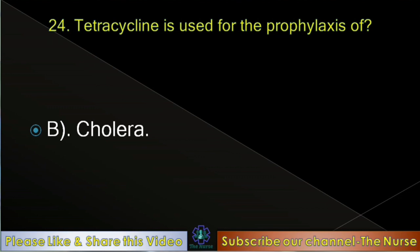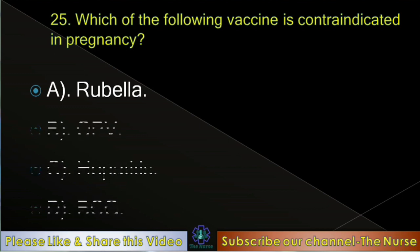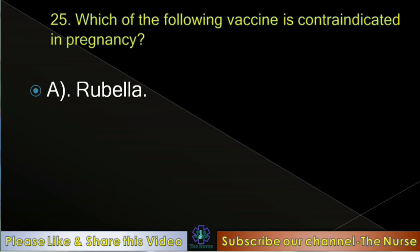Next question: Which of the following vaccines is contraindicated in pregnancy? Options: Rubella, OPV, hepatitis, BCG. Correct answer: Rubella. Rubella is contraindicated in pregnancy.